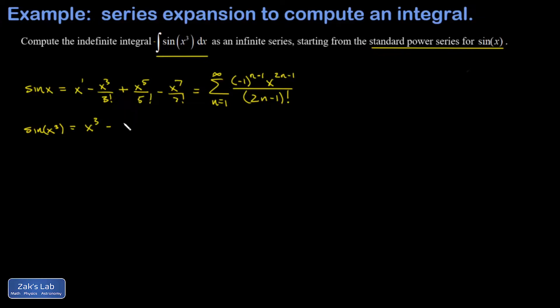A power to a power, you multiply the exponents, so I have x to the ninth over 3 factorial, plus x cubed to the fifth, that's x to the 15th over 5 factorial, minus x to the third to the seventh, that's x to the 21st over 7 factorial, and so on.